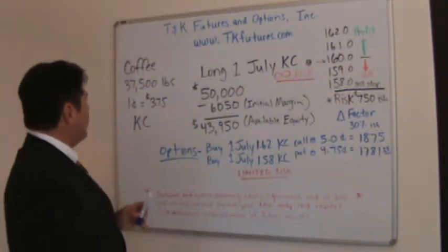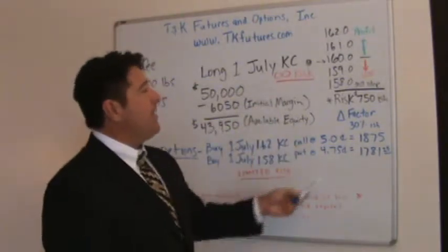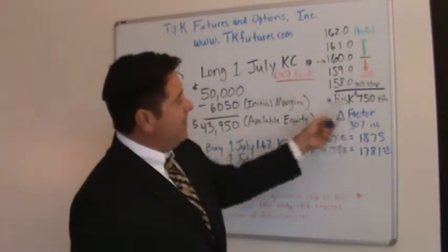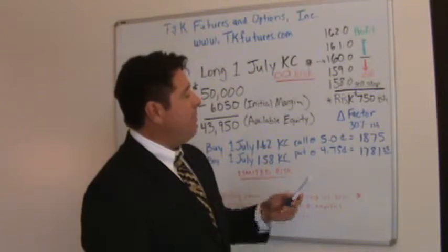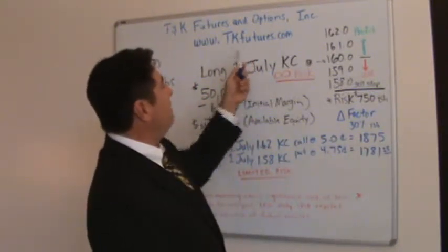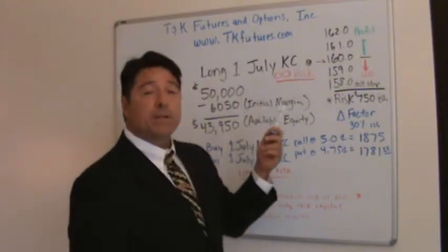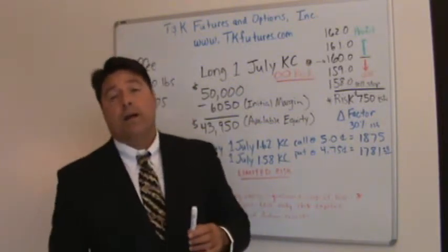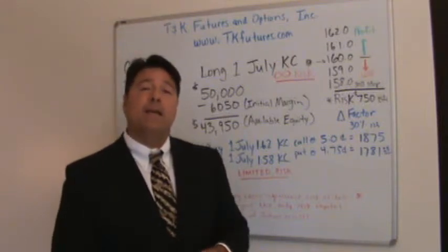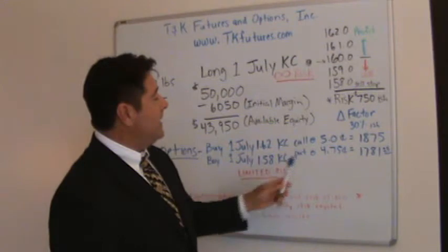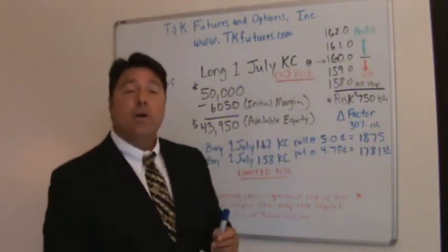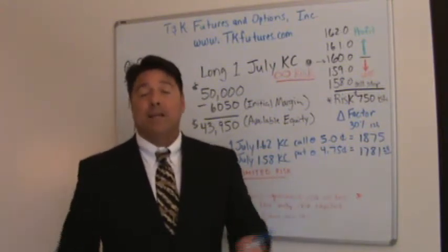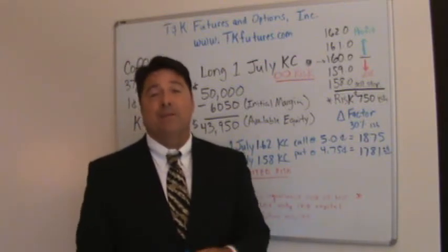I think that just about covers everything I wanted to cover. The futures side is very cut and dry — either win or lose, up and down, just do the math — but you have all these Greeks involved when trying to figure out what an option's worth. If you want to give me a call, go to tkfutures.com. My name is Mike Smith. I wrote a book called 'The No-Nonsense Guide to Buying and Selling Options' — as the title suggests, it's all about options and it's educational. That concludes today's video. I hope you enjoyed it. Have a good day. Bye-bye.